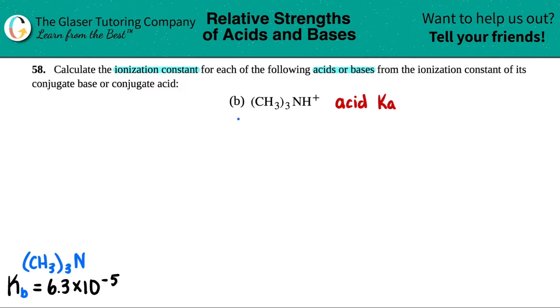So I just want to go from a KB value to a Ka value. What's the formula for that? There's only one of them and that's this one right here. It's the Kw equals Ka times KB.